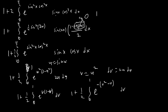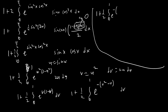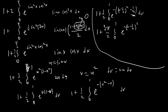We complete the square to use the error function in our answer. We have one plus one-half times the integral from zero to one of e^(-(v - 1/2)² + 1/4) dv. Pulling out the e^(1/4) factor gives one plus (e^(1/4))/2 times the integral from zero to one of e^(-(v - 1/2)²) dv. Shifting the integral bounds, this becomes an integral from -1/2 to 1/2 of e^(-v²) dv.